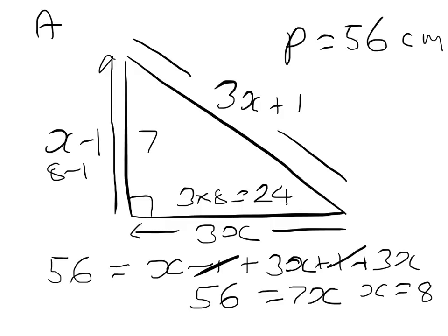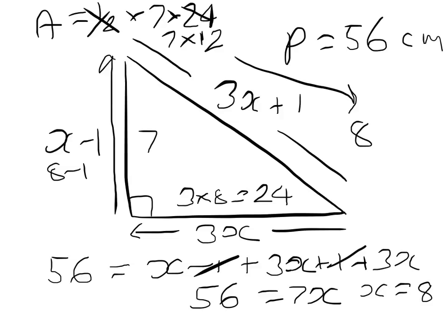So the area will be 1 half times 7 times 24. 3 times 8 is 24, so we can half that 24, and that will give us 12. So we can find our area by simply doing 7 times 12. And 7 times 12 is 84 centimeters squared, which is the answer.